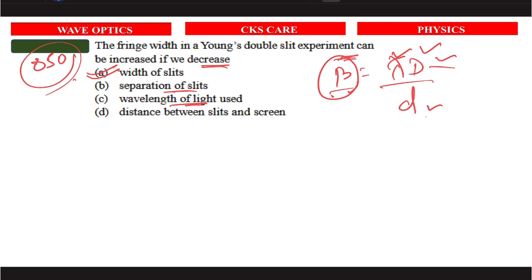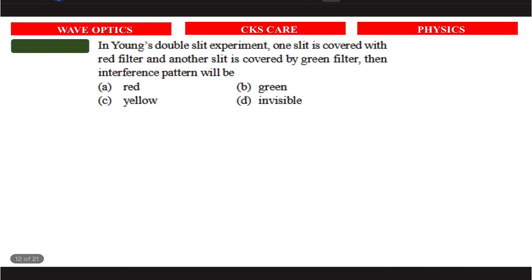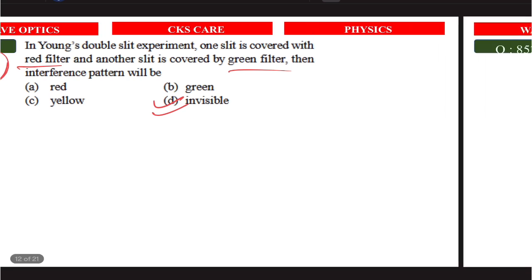One slit is covered with a red filter and the other with a green filter. The interference pattern is very visible because red and green are complementary colors to each other, so very visible interference is produced. This is the right answer.